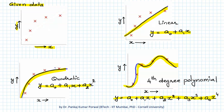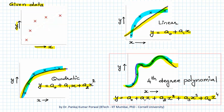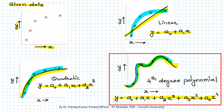Looking at the complexity of the data versus the models: the linear regression model is not able to capture the curvature inherent in the scatter plot of the data. The quadratic model appears to capture the complexity well. The fourth degree polynomial regression model captures even the smaller variations in the data, and from the point of view of training data, it gives the smallest training error.